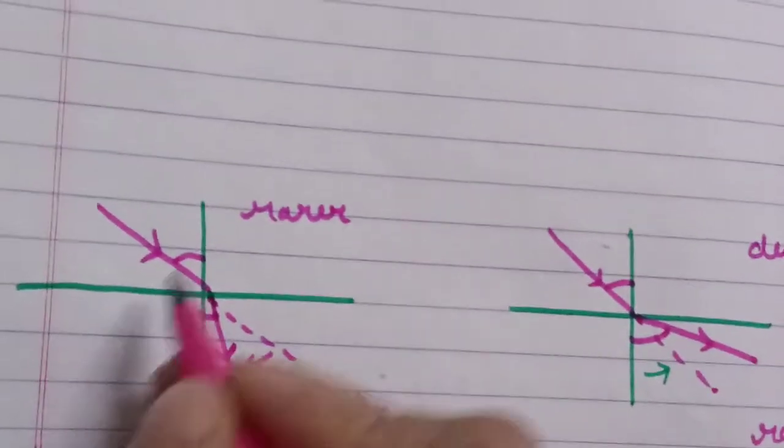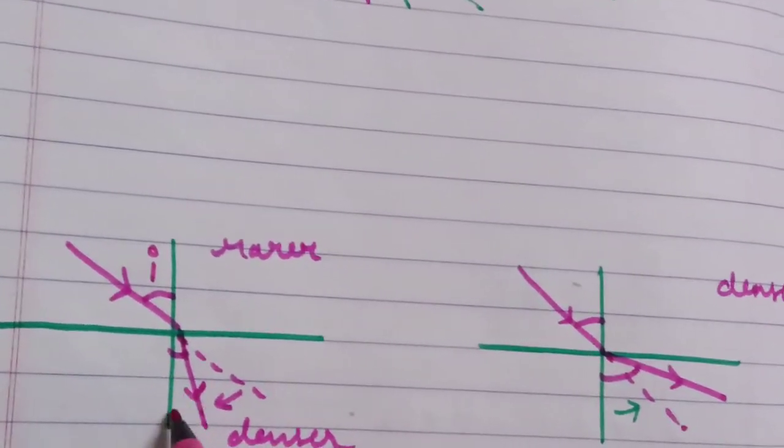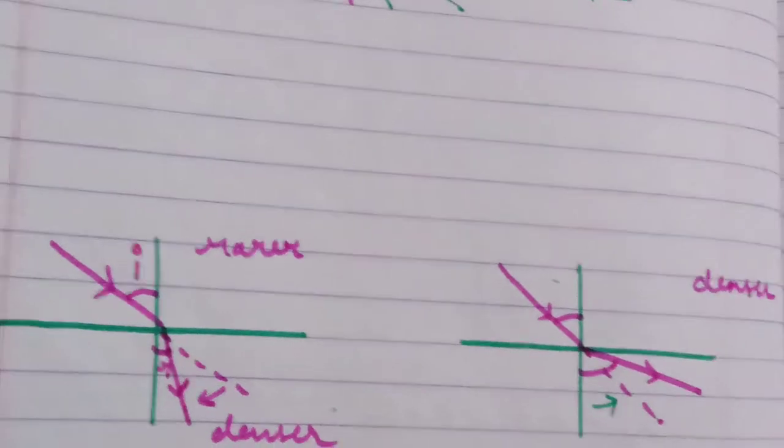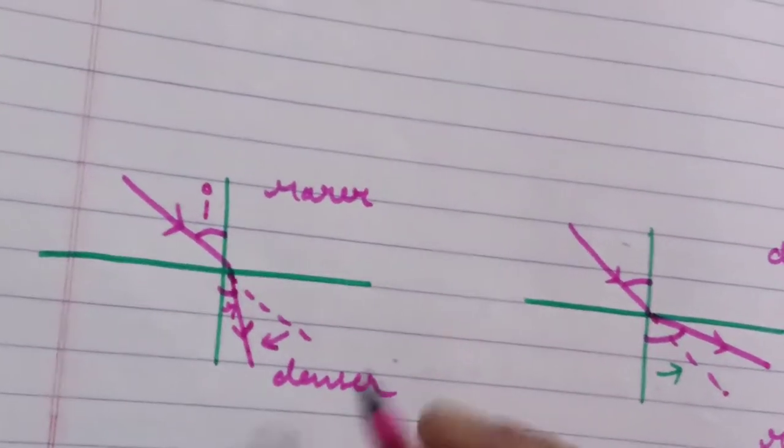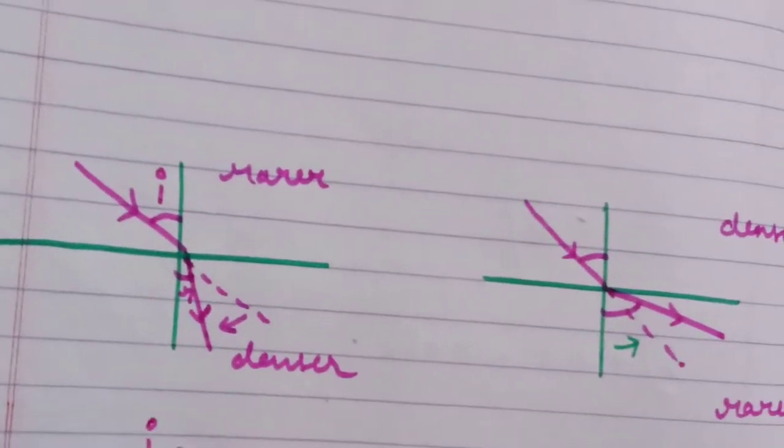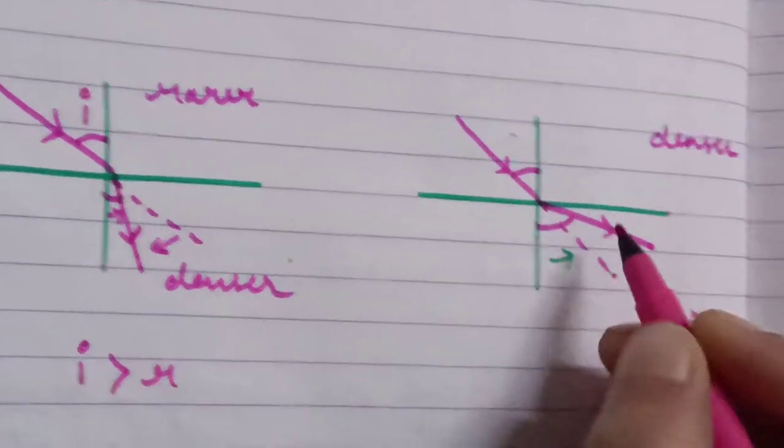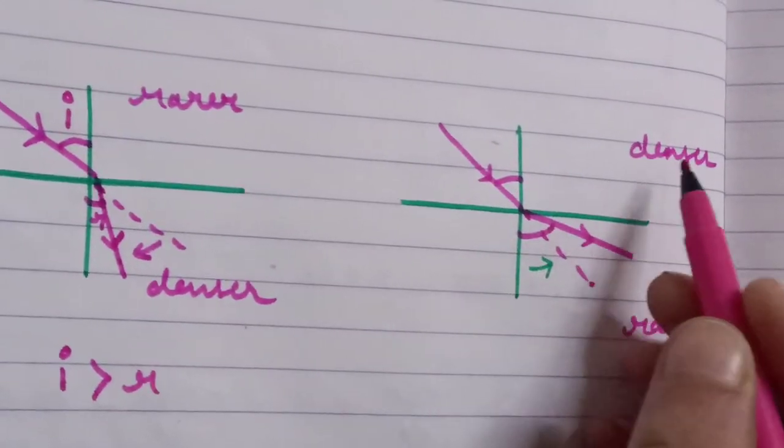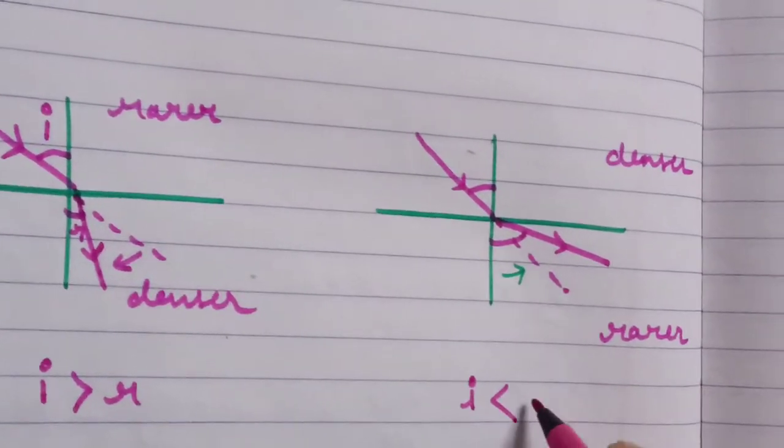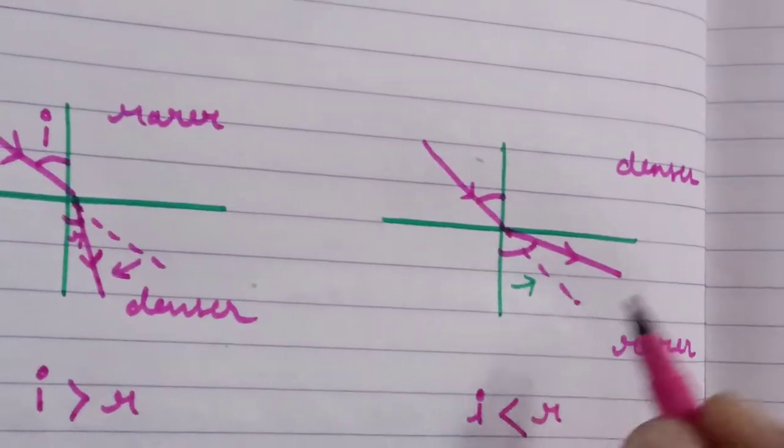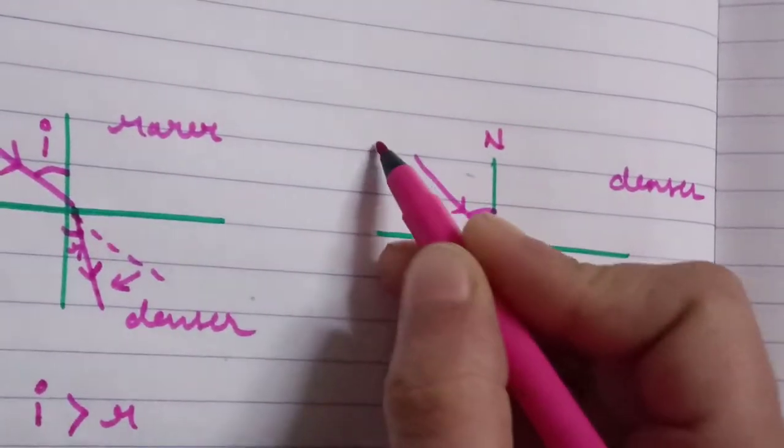Here this is the angle of incidence and this is the angle of refraction. So in this case, when the light goes from rarer to denser, i is greater than r. And in the case when light goes from denser to rarer, the angle of incidence is less than angle of refraction.